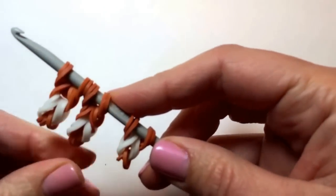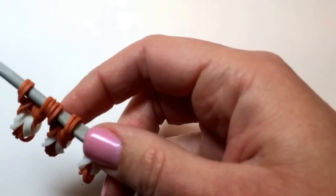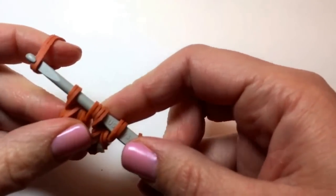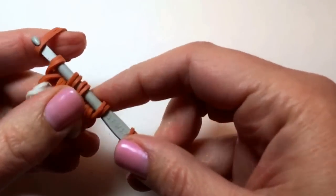So now we have two legs attached to our hook. We're going to wait for the second arm until we're further up on the body. Take two brown rubber bands. Slide them through these three. And we're going to leave this one to the side.